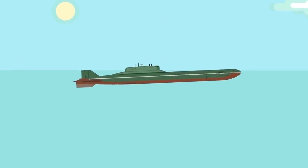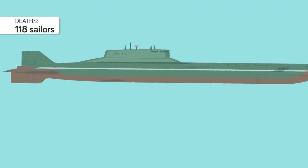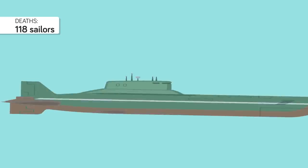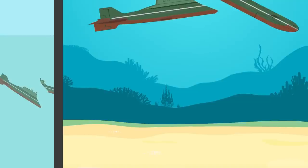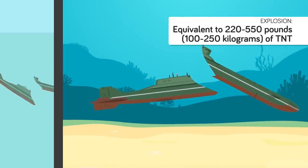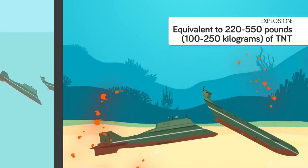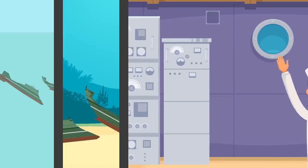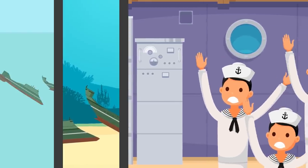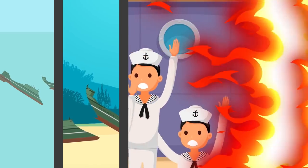38. Second to the sinking of the Thresher, the sinking of the Russian Navy's Kursk killed 118 sailors. Faulty weldings and poor workmanship led to a leak of one of her practice torpedoes' hydrogen peroxide fuel, which caused an explosion equivalent to 220 to 550 pounds of TNT. After settling at the bottom, a second explosion equivalent to 3 to 7 tons of TNT killed all but 23 of the remaining crew. The 23 survivors later died when their chemical oxygen generator created a flash fire, which consumed the remaining oxygen in the compartment they were sheltering in.